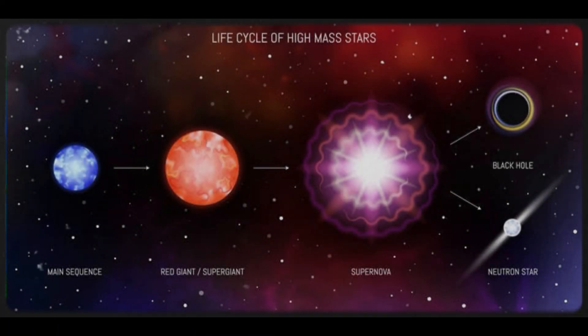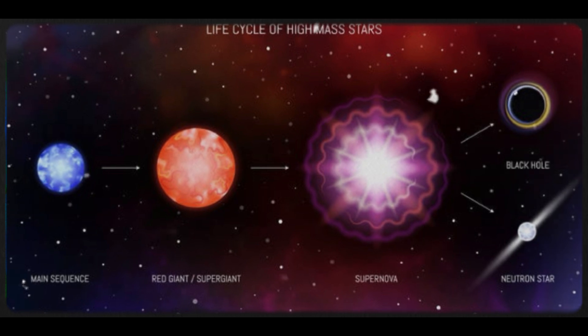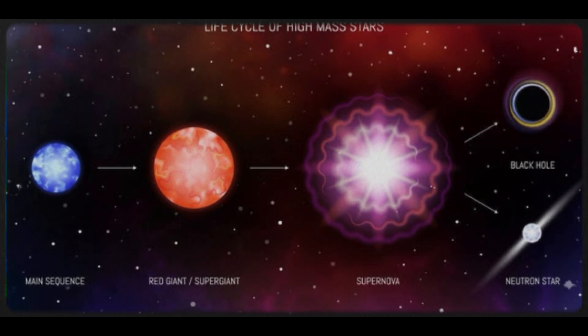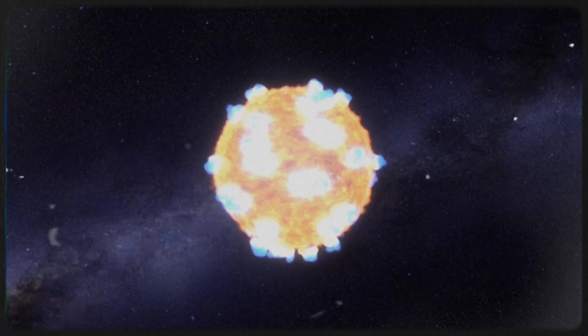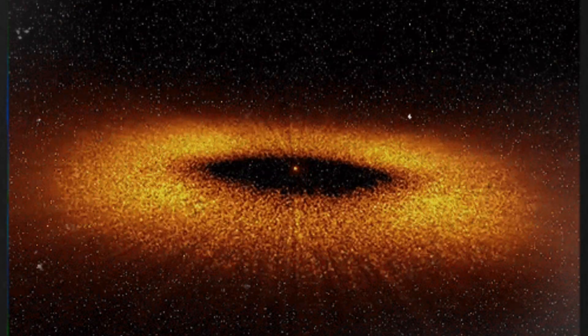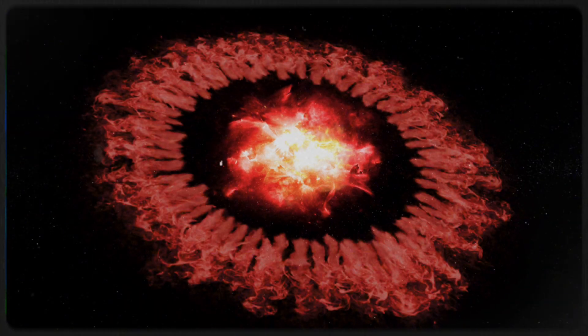One of the most exciting aspects of observing a Betelgeuse supernova would be the chance to closely study the final moments of a star's life. When such stars explode, they scatter heavy elements like iron created within the star into space. This dispersal seeds the universe with the essential building blocks for new stars, planets, and even life itself.